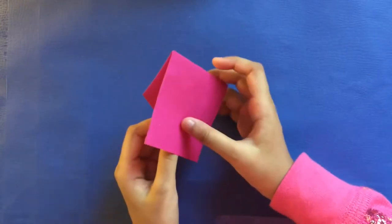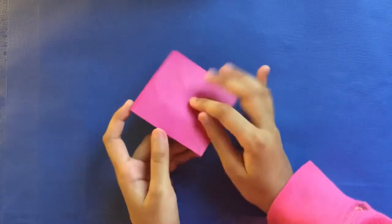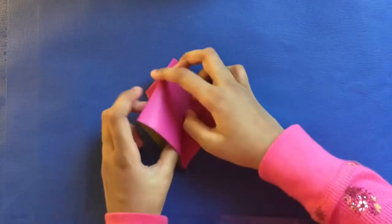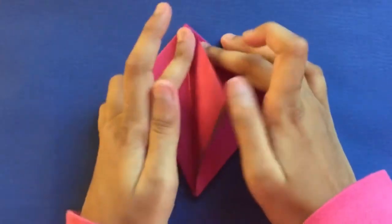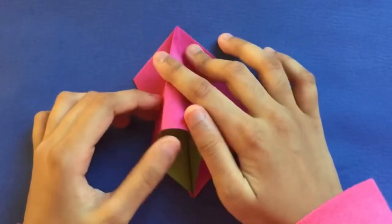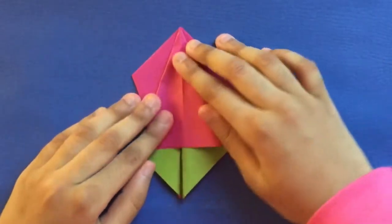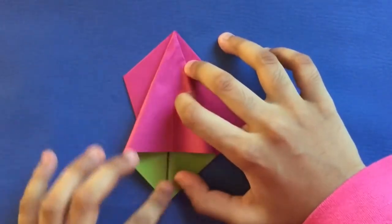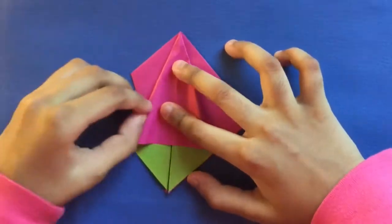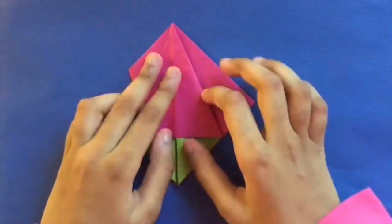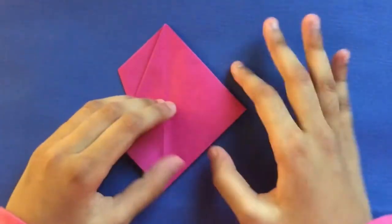Turn it over and what you're going to do is make some squash folds. So make this fold, turn it vertically, and then flatten this and make this crease align with this edge. Fold it over and repeat.